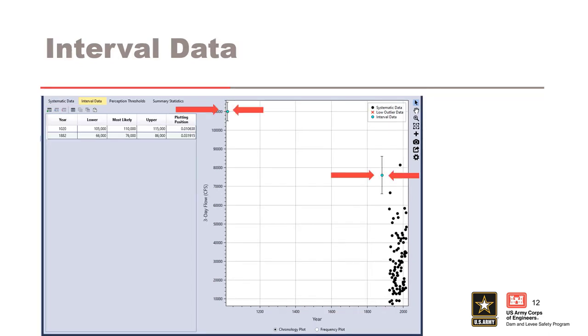Interval data, also called interval sensor data, consists of floods whose magnitude are not known exactly, but are known to fall within a range or interval. Interval data is used for observed floods where the magnitude of the flood has been established and also has significant uncertainty. Enough uncertainty that we don't want to assume that it's exact. In the plot, you can see two flow intervals representing the 1920 and 1882 historic flood events that have been added to the data set. They are displayed as light blue points with uncertainty whiskers. Historical and paleo flood events can be incorporated into the analysis using a flow or volume interval.